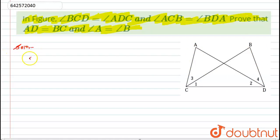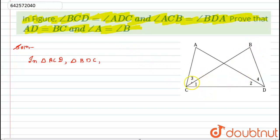Let's start with the solution. In triangle ACD and in triangle BDC, I will make some consideration. Let angle BCD be angle 1, angle ADC be angle 2, and similarly angle ACB be angle 3 and angle BDA be angle 4. Now, as per the given, angle BCD is equal to angle ADC — it means angle 1 is equal to angle 2. This is given to us.